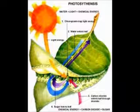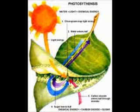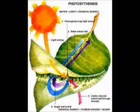They do this through the process of photosynthesis, and plants utilize sunlight, carbon dioxide, and water in this process to produce starch.